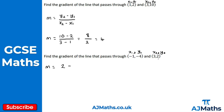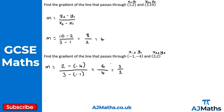So y2 is 2 minus y1 — be very careful here — that's 2 minus minus 4, all over x2 which is 3 minus x1 which is minus 1. 2 minus minus 4 is the same as 2 plus 4, which gives 6. For the denominator, 3 minus minus 1 is the same as 3 plus 1, which gives 4. So we get 6 over 4, which simplifies to 3 over 2. The gradient is 3 over 2.